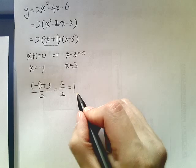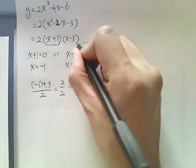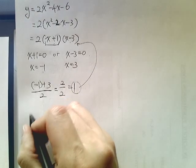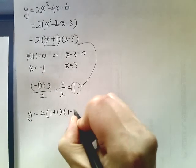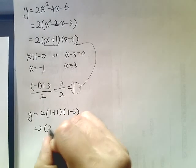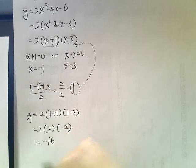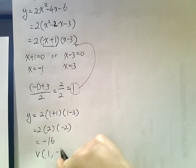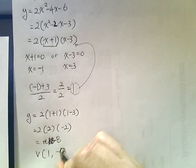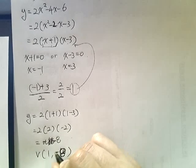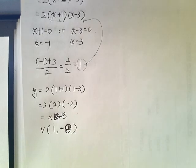So this is the x-value of your vertex. Then you put this 1 into the factored form. So the factored form, then we have y equals 2, 1 plus 1, and then 1 minus 3. So 2 times 2 times negative 2, which is negative 16. So our vertex is 1 comma, oops, sorry, negative 8. My bad. Negative 8. Oy! Negative 8. Okay? So the vertex is 1 comma negative 8.